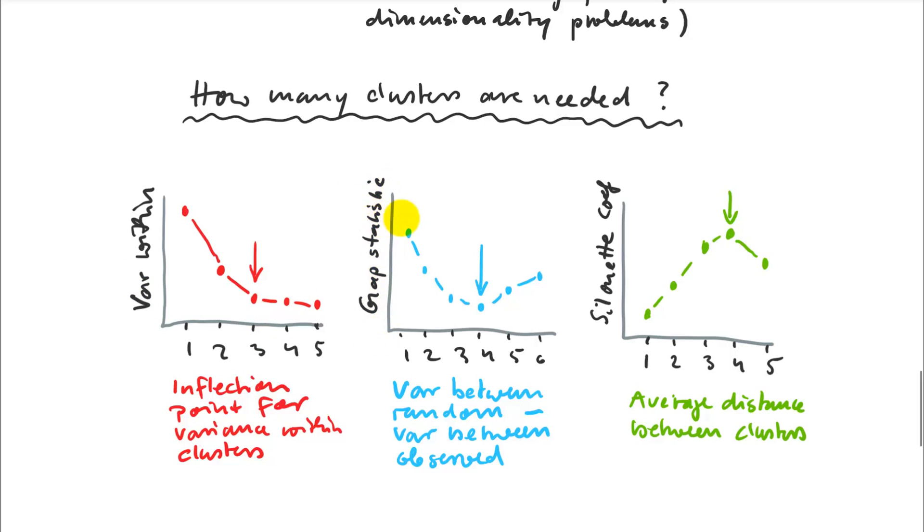Another one is a gap statistic. That's basically the variance between observations, but you also use a reference data set. The reference data set is a random positioning of your points in an ordination. Then you subtract the variance between clusters from that random positioning. Where that is lowest can be an optimal number of clusters. I find this one doesn't always work. Your mileage may vary in getting guidance from this gap statistic. And then another one is the silhouette coefficient. That's based on average distance between clusters. The way that is calculated is that for every point, you calculate how close it is to its own cluster and how far away it is to other clusters. On this basis, you can calculate an average distance between clusters. It's a little bit more complicated than that. If you want, you can look it up how it exactly works. But that is the general principle. In that case, I would pick something like four clusters.